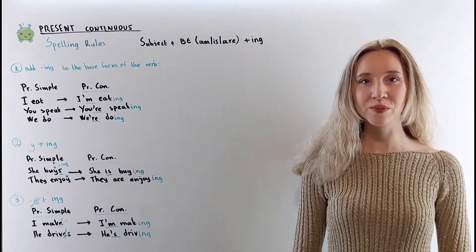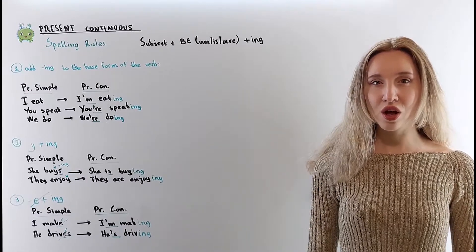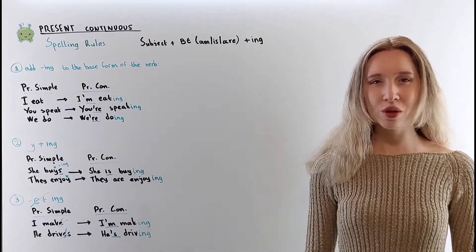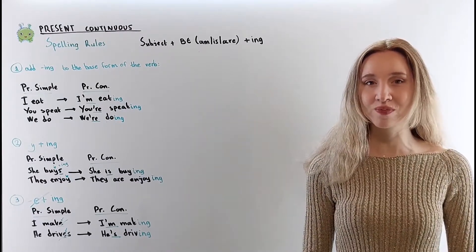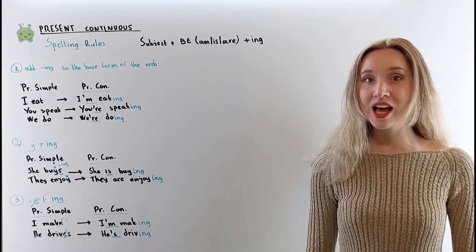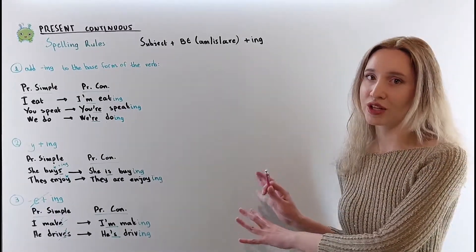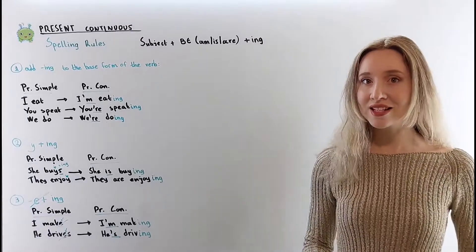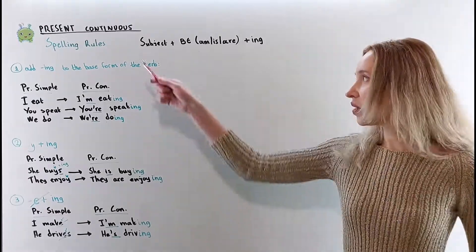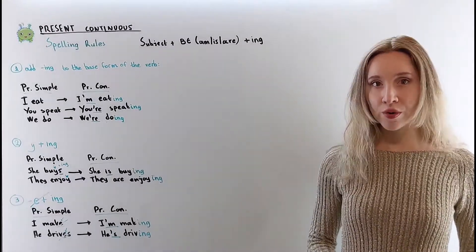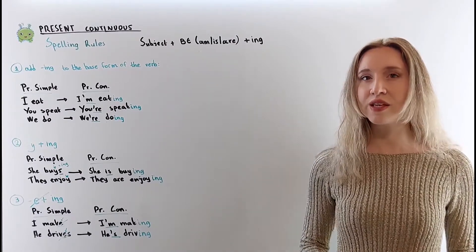Hello brilliant learners! What do you know about present continuous? There will be a lot of pausing today, so don't hesitate to pause this video if you need more time to answer my questions. You'll find a link, a file in the description with everything you see on this whiteboard today. The present continuous is also called present progressive — the words continuous and progressive tell us that something is in progress, is continuing.